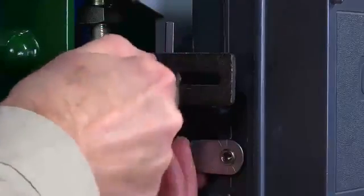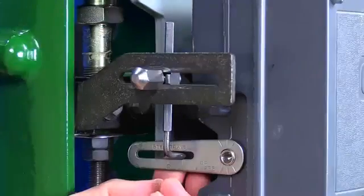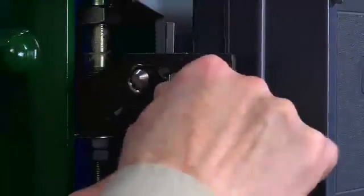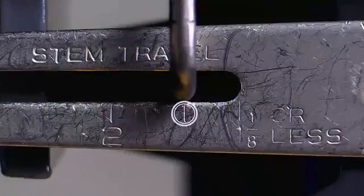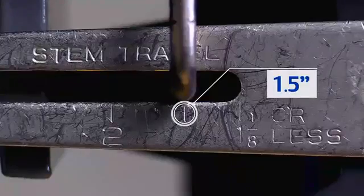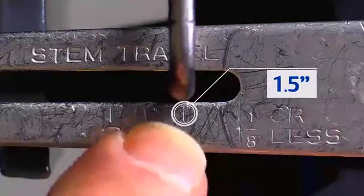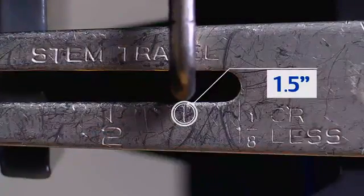Step five, insert the travel pin in the slot of the rotary shaft arm above the mark for the rated valve travel and tighten the cap screw. Two things are important in the placement of this travel pin. First, we want it in the slot over the mark that indicates the rated travel of the valve. In this case, our valve has a one and a half inch stroke, so we'll put the pin over the mark for that travel.